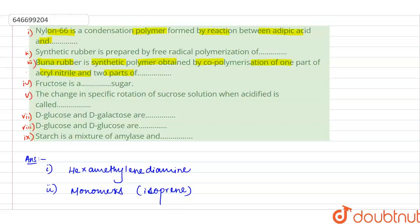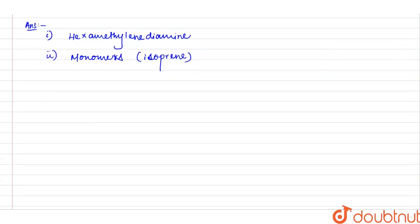Okay, so I have this, this will be three and this is four, so this is five and this is six, this is seven and this is eight. Okay, so Buna rubber is synthetic polymer obtained by copolymer of acrylonitrile and 1,3-butadiene.